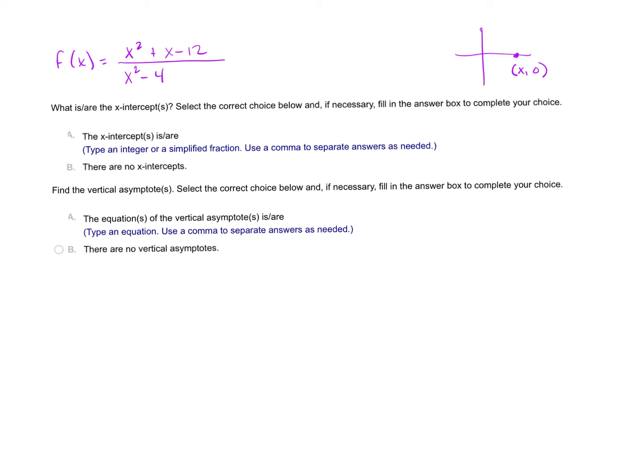I'm going to have 0 equals x squared plus x minus 12 over x squared minus 4. The only way a fraction can equal 0 is if its numerator equals 0. I just need to solve 0 equals x squared plus x minus 12. That factors to x plus 4 times x minus 3. Set each factor to 0 and you get x equals negative 4 and 3 as the x-intercepts.